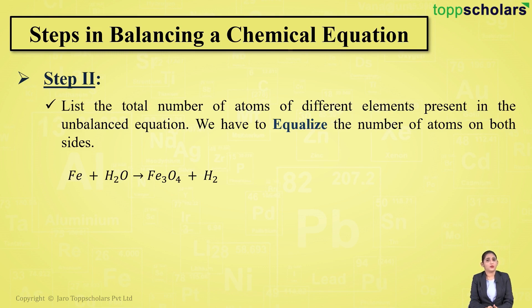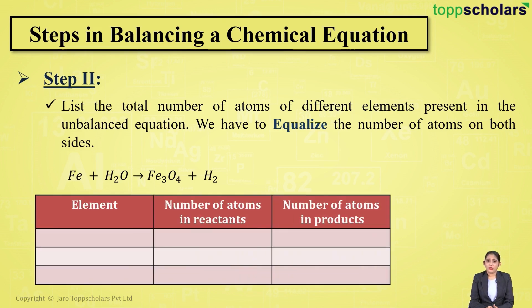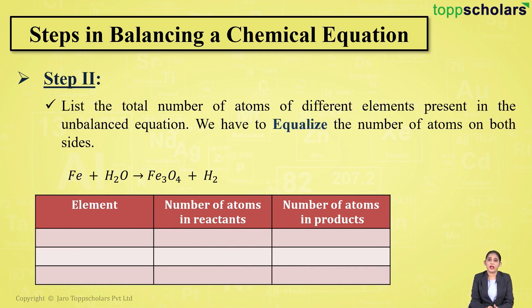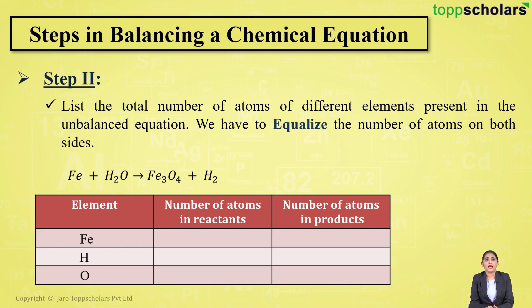In the first column, write down the element. In the second column, the number of atoms in reactants. In the third column, the number of atoms in products. The elements present in this reaction are iron, hydrogen, and oxygen.